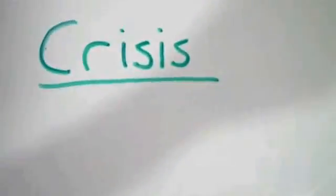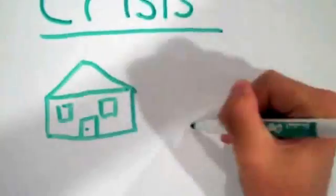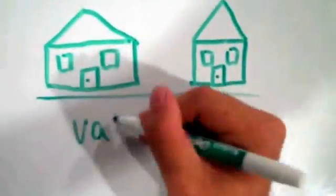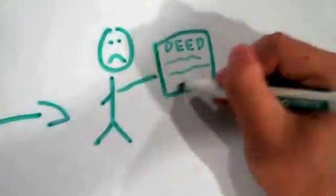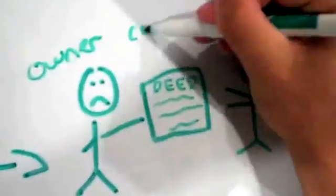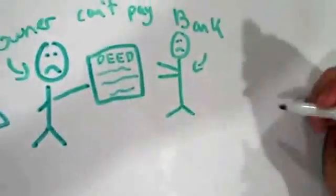The crisis came on as property values stopped rising, and many subprime borrowers found themselves unable to pay the mortgages they had structured, and they had to default. This would have been okay in a good market, but when prices fell, banks started foreclosing houses that were rapidly losing value.